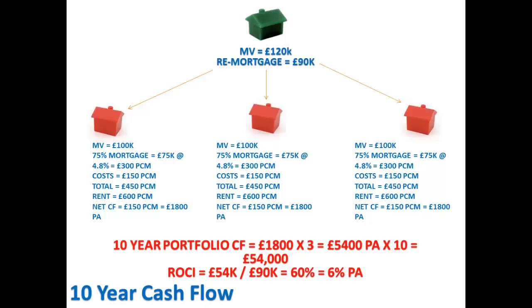If we take the first property and we've bought it for £100,000 with a 75% mortgage, that's a £75,000 mortgage. We're going to assume a 4.8% interest rate, which tends to be quite a common rate. So £75,000 at 4.8% gives us £300 per calendar month — meaning we're paying the bank £300 per calendar month. We're also going to assume costs of £150 per month per property: managing agent fees, maintenance, void periods, and insurance. Those are the main categories.